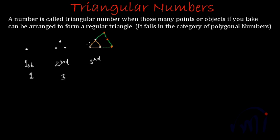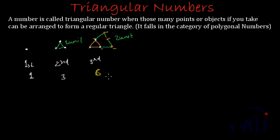Now this becomes a triangle whose each side is equal to 3 points, and this is a regular triangle. So what is the third triangular number? We just have to count these number of points. The triangle we have formed has each side equal to 3 points, or 2 units of length, if we call the distance between 2 points as 1 unit. How many points do we have? There are 1, 2, 3, 4, 5, and 6 points. So 6 is the third triangular number.